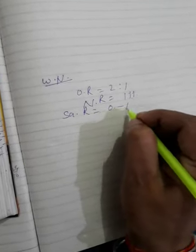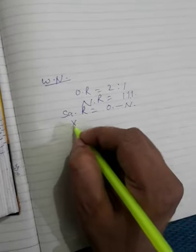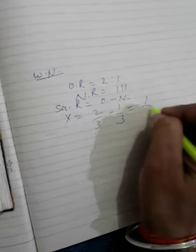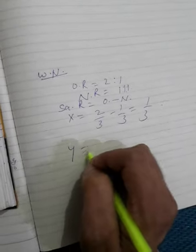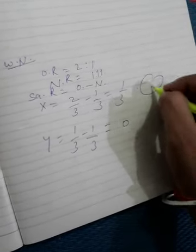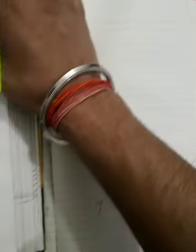Sacrifice ratio equals old minus new. Hence, X equals 2/3 minus 1/3 equals 1/3. Only X sacrifices, that is why only X's capital account will be credited.